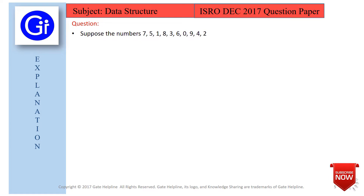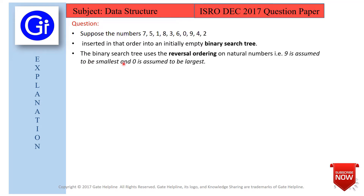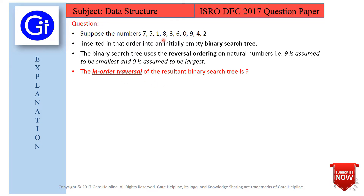Now we will see the explanation to this question. We are asked to insert the numbers 7, 5, 1, 8, 3, 6, 0, 9, 4, 2 in that order into an initially empty binary search tree using reversal ordering — where 9 is the smallest and 0 is the largest. After building the BST, we need to find the in-order traversal, which is the answer.